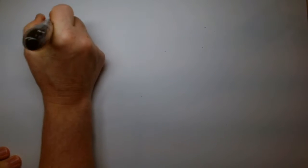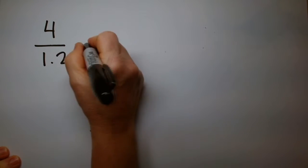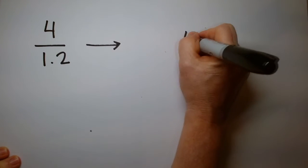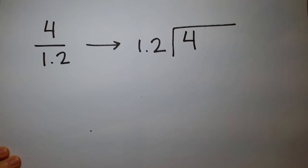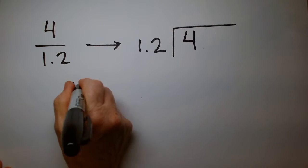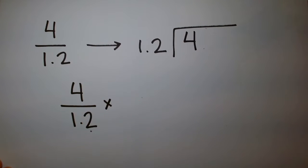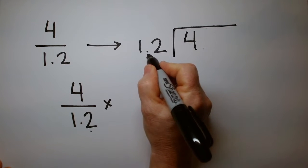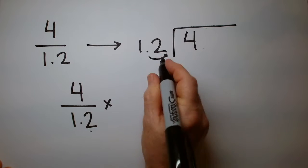If I take the number 4 divided by 1.2 and write it as a long division problem, the 4 goes in the box and the 1.2 is outside. I don't know my 1.2 times tables, so instead I'm going to take 4 over 1.2 and multiply it by whatever I need to make this a whole number. If I multiply by 10, the decimal point gets pushed and that becomes 12.